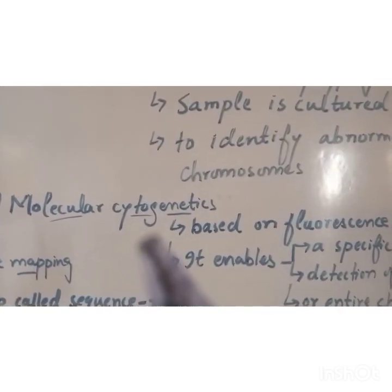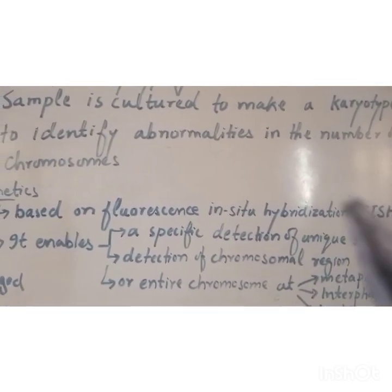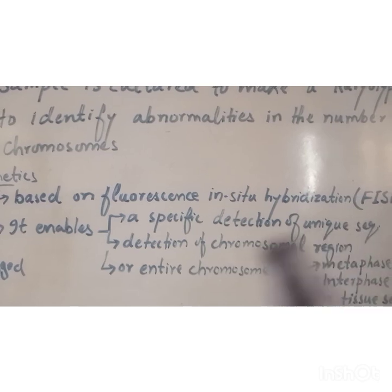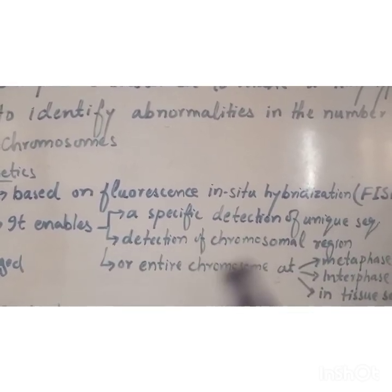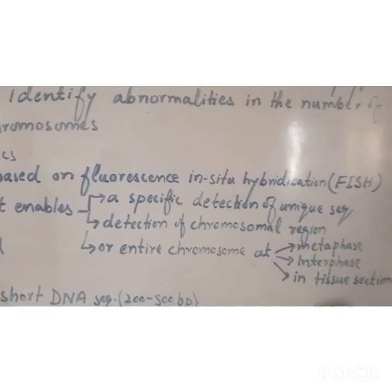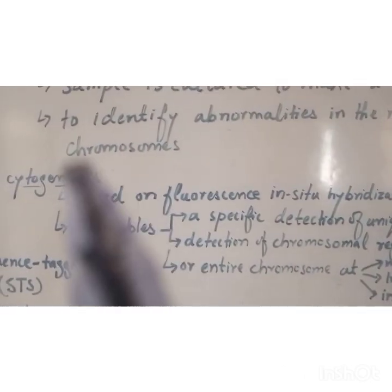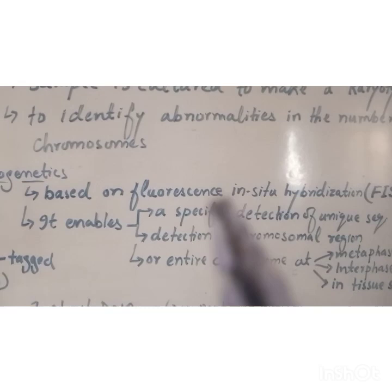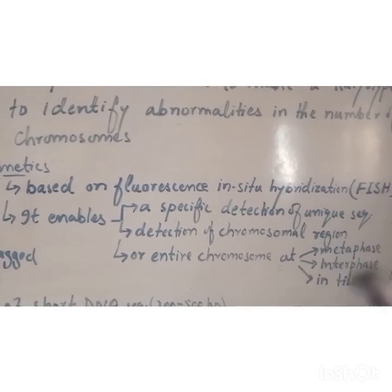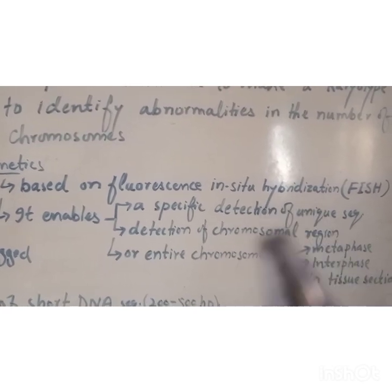The second type is molecular cytogenetics, which is based on fluorescence in situ hybridization (FISH). It enables specific detection of unique sequences on the chromosome. It is also used for detection of chromosomal regions or entire chromosomes at metaphase stage, interphase cells, or in tissue sections. Molecular cytogenetics में FISH technique से chromosomal regions, unique sequences, किसी भी stage पे — metaphase, interphase, या tissue sections — उनकी detection की जाती है।